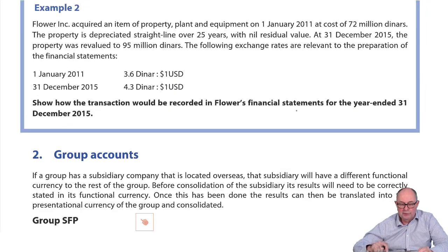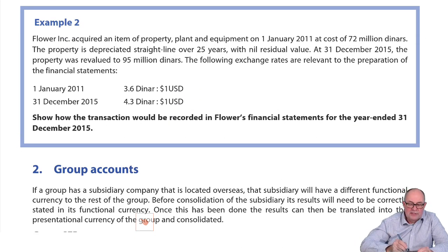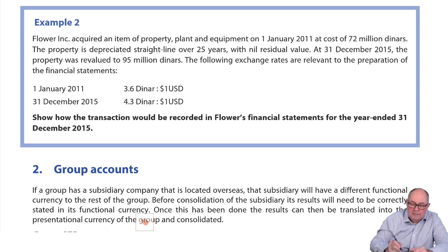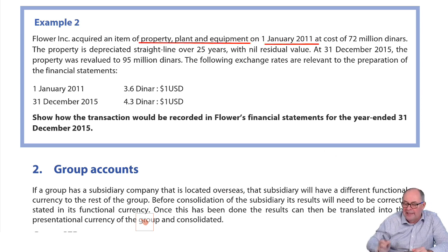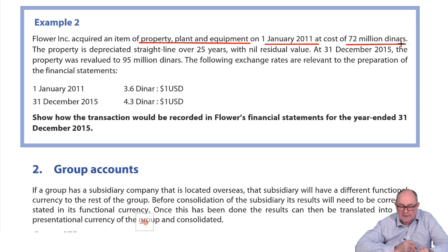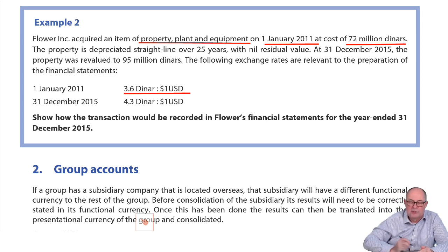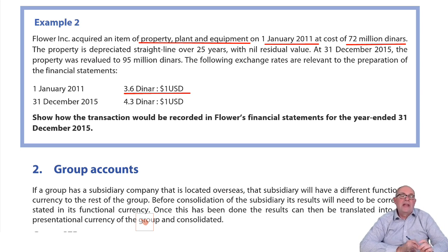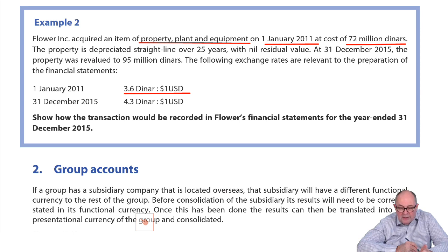In example two, we can see that a company has bought some property, plant and equipment. That took place in January 2011, and they spent 72 million dinars. On that day, we can see the exchange rate was 3.6. So the asset would originally have been translated using that exchange rate.